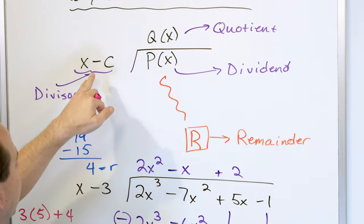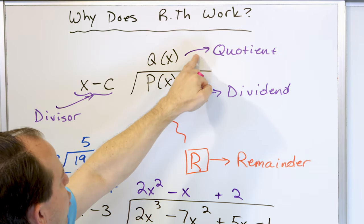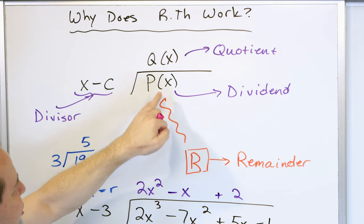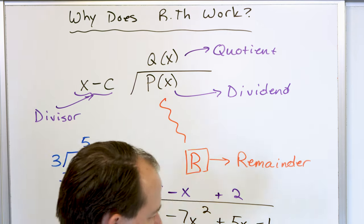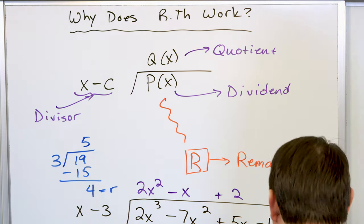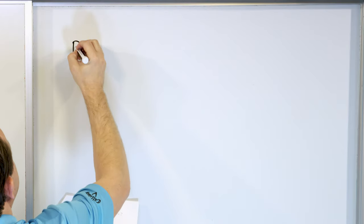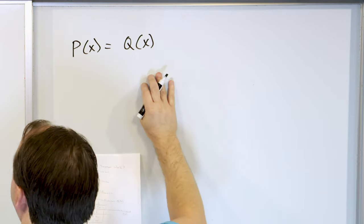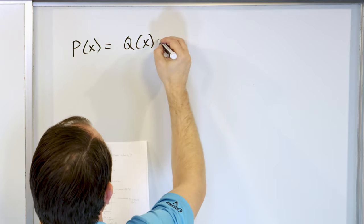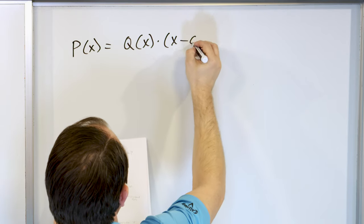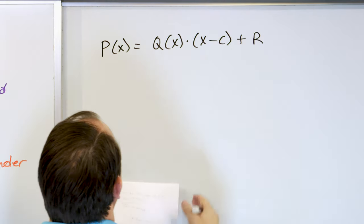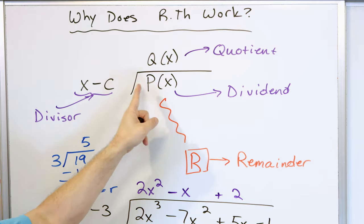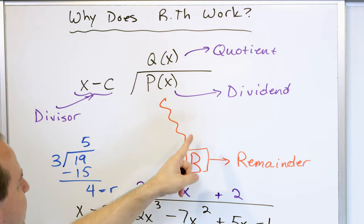So we're doing the same thing here. We take the divisor, multiply by the quotient, add the remainder, and what we get should equal the dividend. If you generalize that, you say the polynomial p of x is going to be equal to the quotient q of x times the divisor x minus c, plus the remainder. All I've said is this polynomial equals the divisor times the quotient plus the remainder.